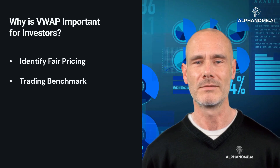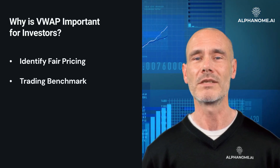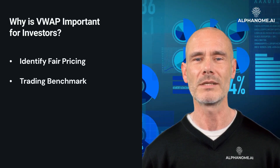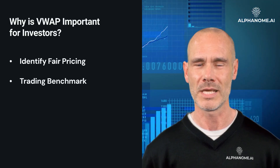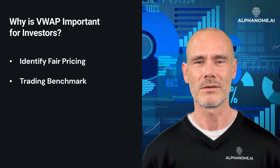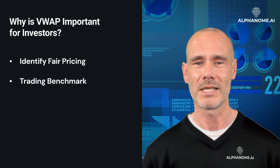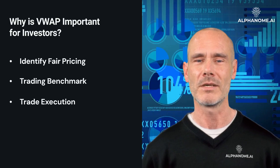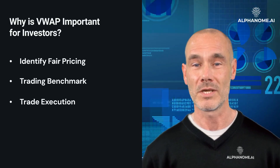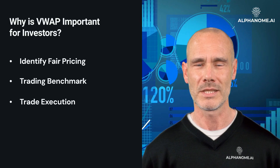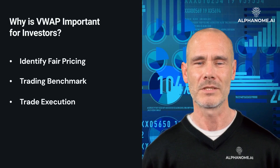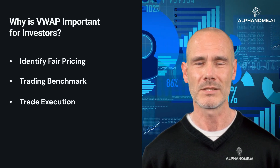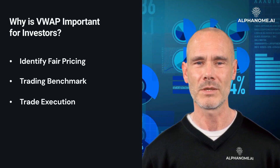Second, as a trading benchmark, traders often use the VWAP to determine if prices are relatively high or low compared to the average — for example, they may look to buy below the VWAP and sell above it. Third, for trade execution, large institutional orders are often executed by algorithms that use VWAP as a benchmark to minimize market impact, with orders split and executed incrementally at prices close to the VWAP.